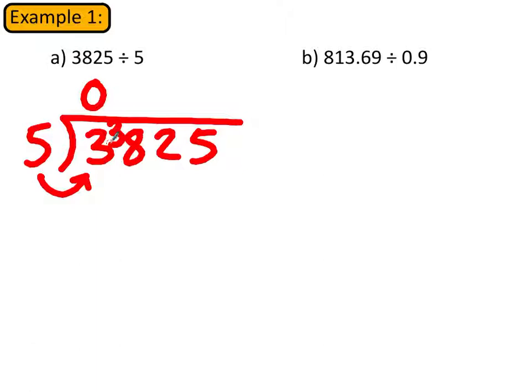So we've now got fives into 38, and how many fives go into 38? Well of course five times seven is 35, so there's seven full fives in a 38 and there is three remaining.